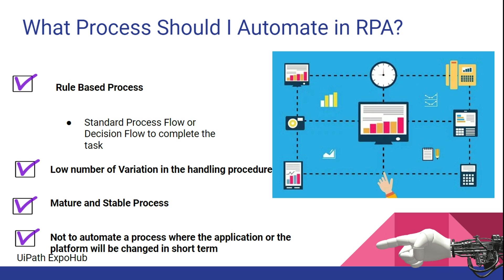The next rule is that it should be a mature and stable process. That means the process has not changed for the last couple of years — it is very standardized with no major improvements expected. You should ask the project owner: how many times has this process changed? When was the last change? If there have been two process changes in the last two weeks, it is not mature enough to automate.